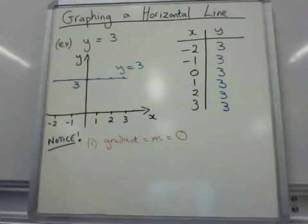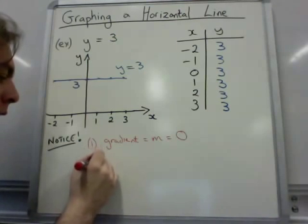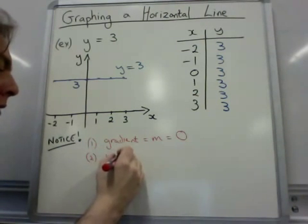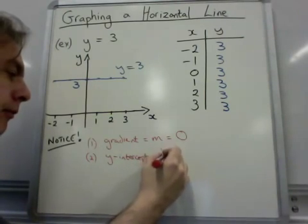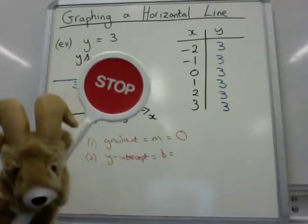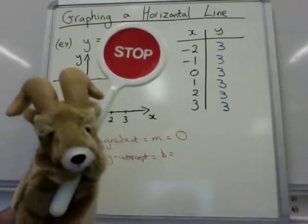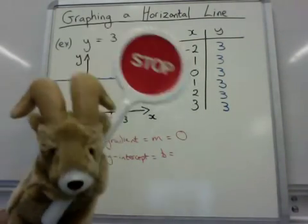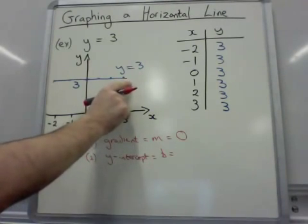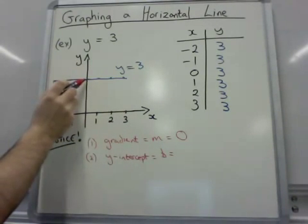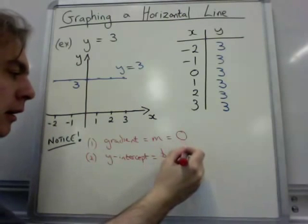What else can we look at? You should be able to tell me what the y-intercept is, or the b value. Stop the video, decide what you think it is. When you're ready, turn the video on. The y-intercept is when the line hits the y-axis, and this happens at the number 3.